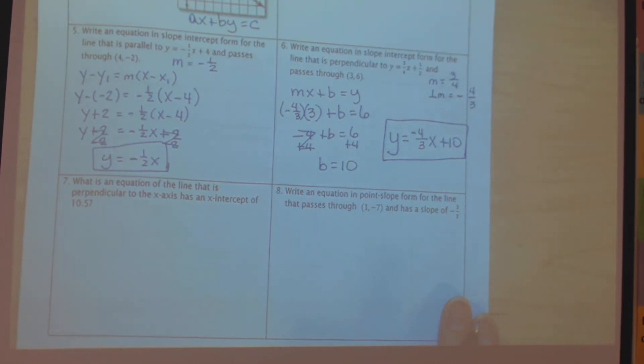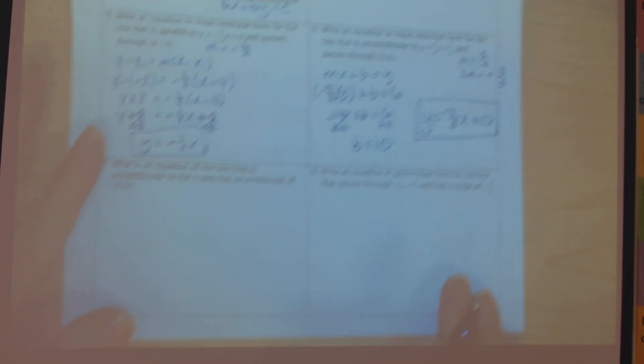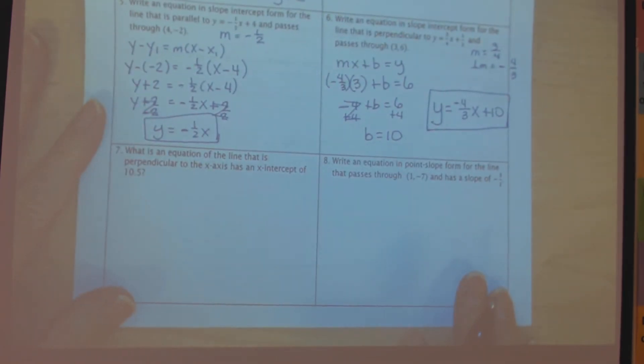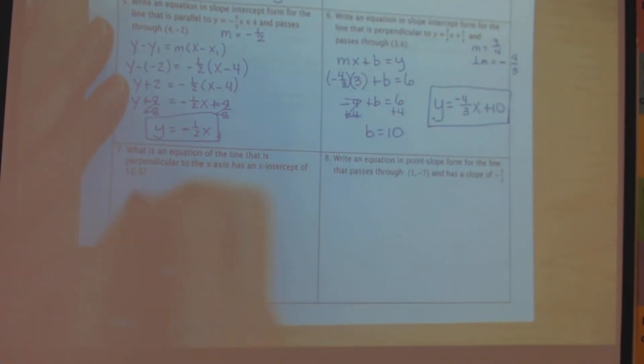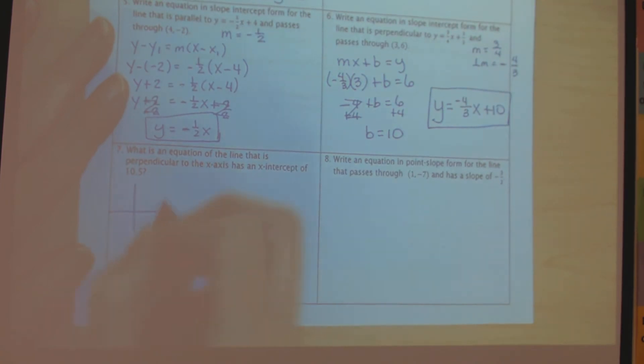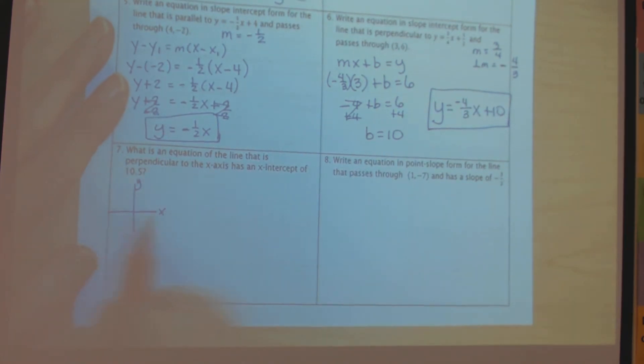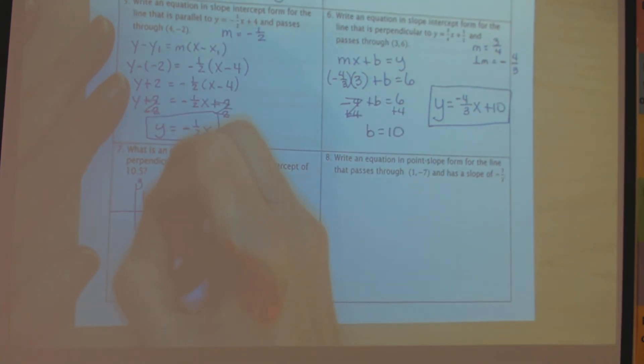Okay, number seven, what is an equation of a line that is perpendicular to the x-axis and has an x-intercept of 10.5? Okay, so I'm going to draw me an x-y plane here, and I need a line that is perpendicular to the x-axis. The x-axis is here, so if you're perpendicular, you're going to look like this. It also told me that this line has an x-intercept of 10.5, so this point right here is 10.5.